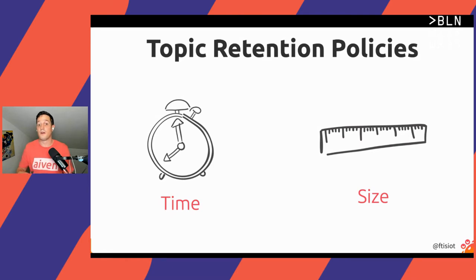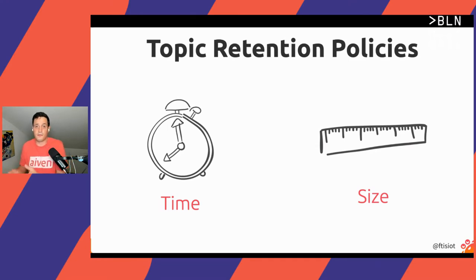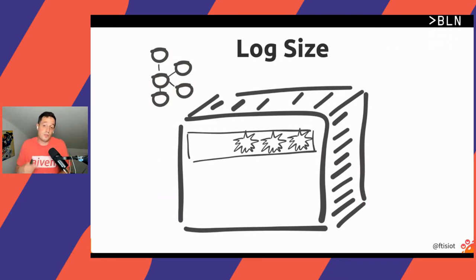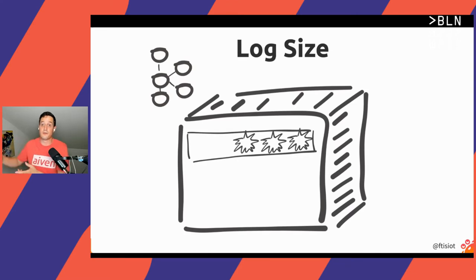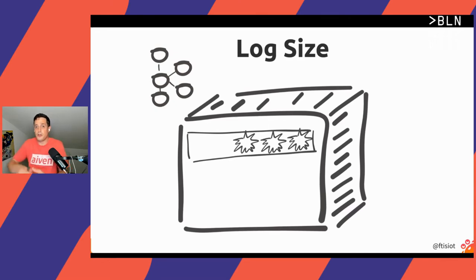You can also use both time and size-based retention policies together for better control. Now let's think a little bit more about the size of the topic. If you think that we store events in a topic and that topic is stored in a broker, this means we have to define the amount of events we want to store based on the disk size of the broker — which is a weird trade-off for a platform that aims to store a huge amount of data.